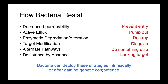Bacteria have a similarly broad spectrum of defense mechanisms against the drugs we use to try to kill them. Some organisms have decreased permeability, so they prevent drug from entering the cell — they shut down their cell wall. They can have active efflux, pumping out the drug before it's able to have its effect on its target. They can produce enzymes which either degrade or alter the drug such that it's no longer active. They can modify targets within the cell such that the drugs aren't able to recognize them and aren't able to bind. They can utilize alternate metabolic pathways such that they accomplish the same physiological objective through a process that's independent of the antimicrobial. Or we can have simple resistance by absence, where the drug target doesn't exist. All of these strategies can be deployed either intrinsically — as normal for an organism — or after the bacteria has gained some sort of genetic competence through a mutation or by picking up a resistance gene.